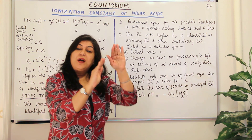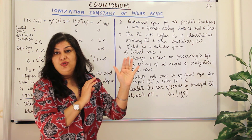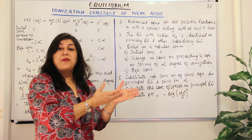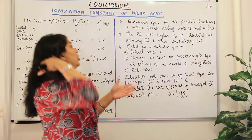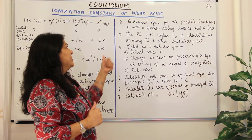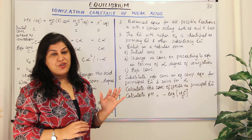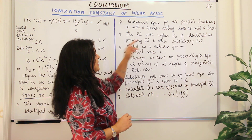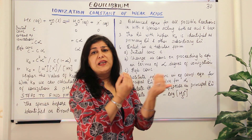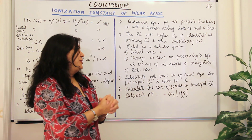The third step is to compare the values of Ka. The Ka for the ionization of water is 10⁻¹⁴. The reaction with the higher Ka is identified as the primary reaction; the water–water reaction, where there is very little difference in acidic or basic character, becomes the subsidiary reaction.